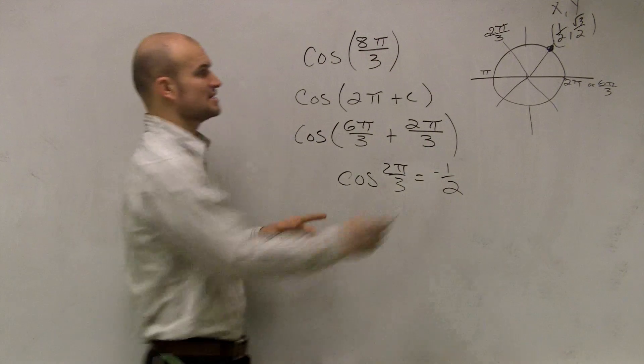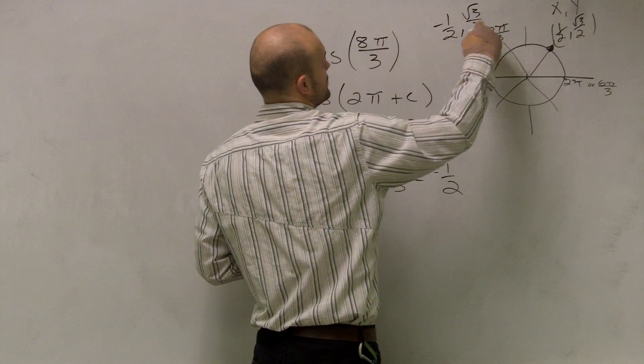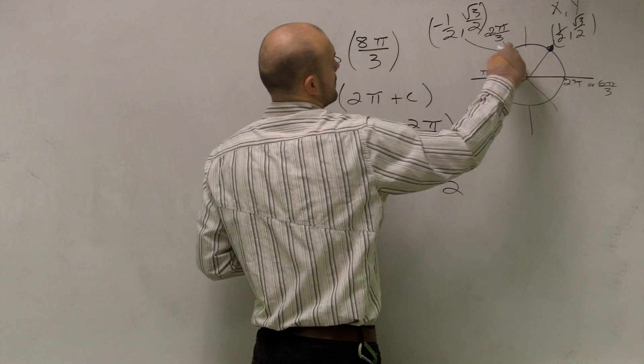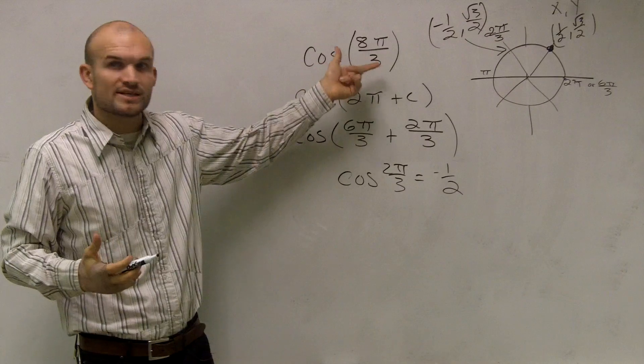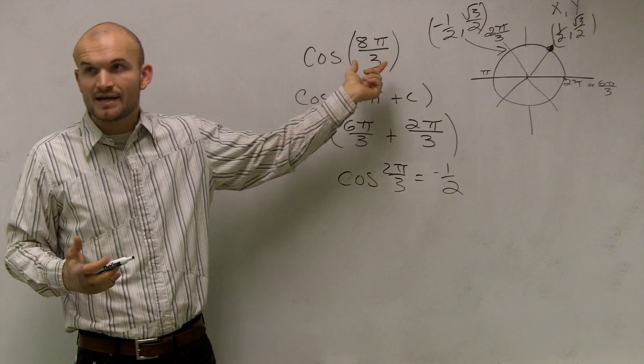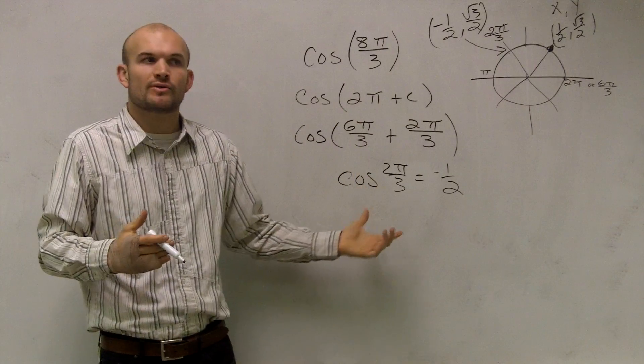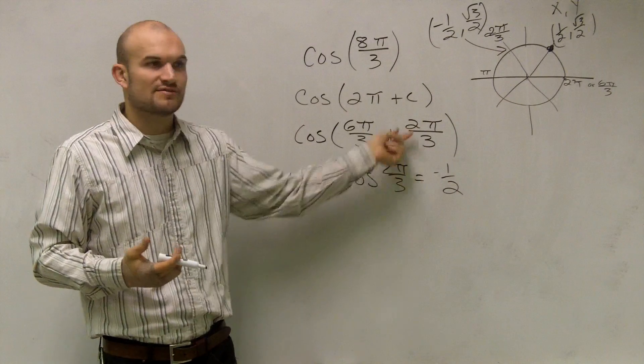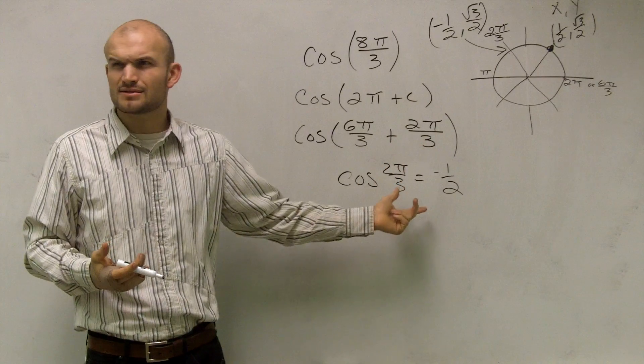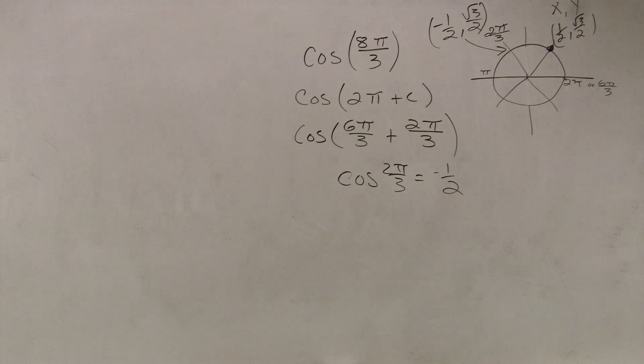All right, so all they're saying is when you can use a period, when you notice something is greater than 2π, what we can do is we can factor out that 2π. You're just taking what's left over and evaluating that portion. Make sense?